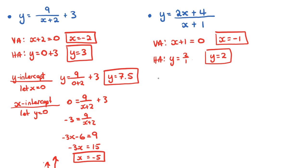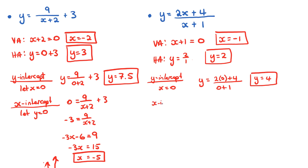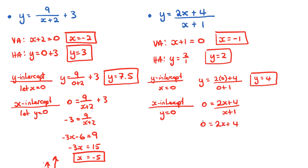For the y-intercept, let x equal zero: y equals two times zero plus four over zero plus one, which gives y equals four over one, so y equals four. For the x-intercept, let y equal zero: zero equals two x plus four over x plus one. Multiplying up by x plus one gives zero equals two x plus four. Moving four over gives negative four equals two x, so x equals negative two.